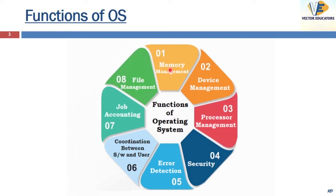The operating system manages main memory — it keeps track of how much portion of memory is being used and which process is using it. When a process sends a request for memory, the OS allocates it, and after process termination, it de-allocates it. The operating system also distributes memory in multiprocessing environments.